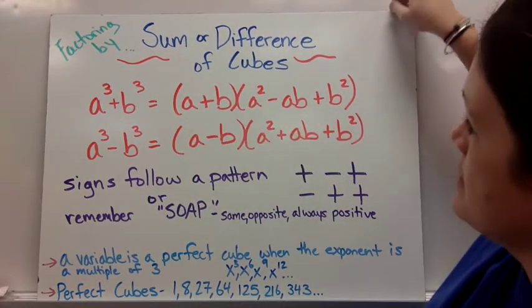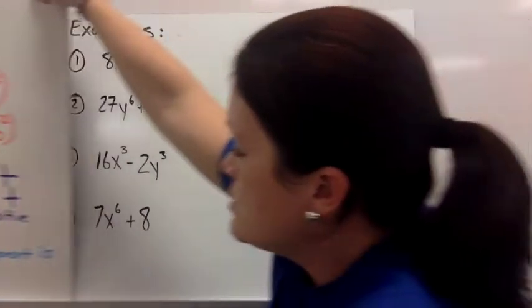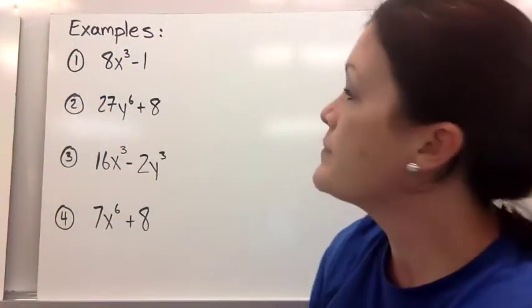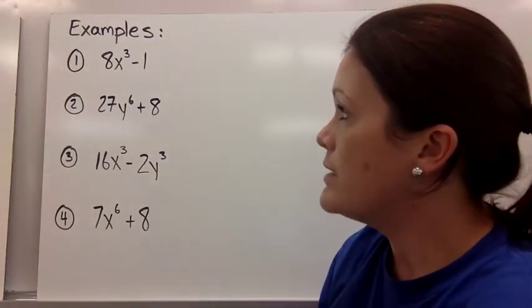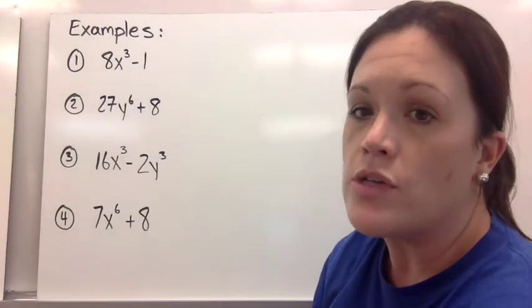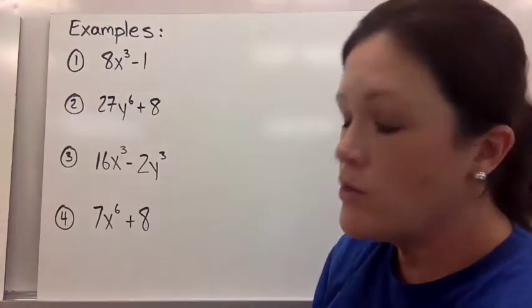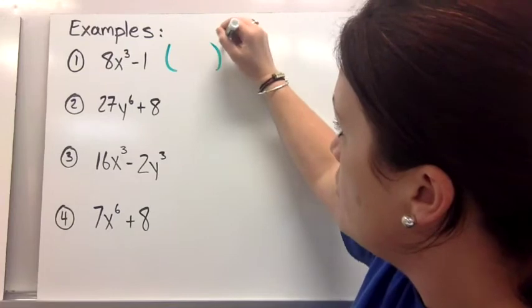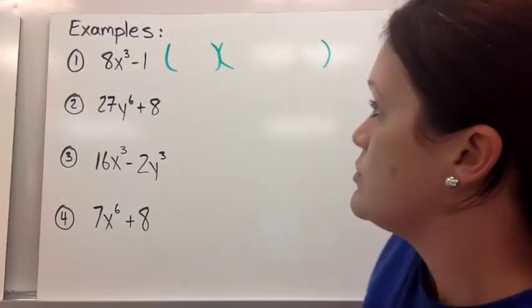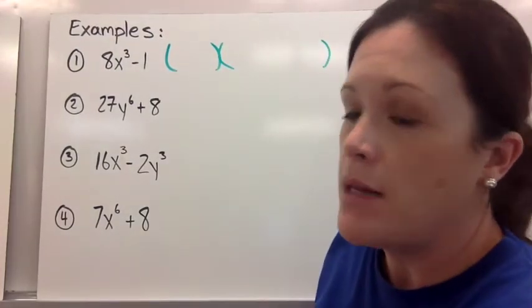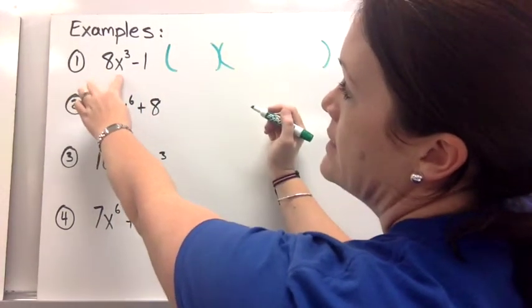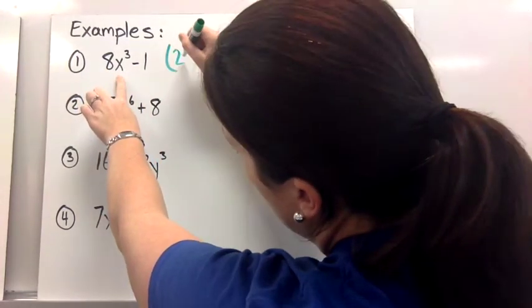Let's look at some examples. I just wrote down a few because they all work very similar to one another. So example one is 8x cubed minus 1. So you're given a binomial, you notice 8x cubed and 1 are all perfect cubes. So you factor it into a binomial and a trinomial. So set up a little pair of parentheses and a bigger pair of parentheses.